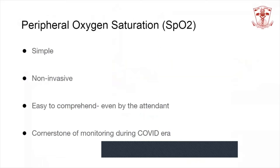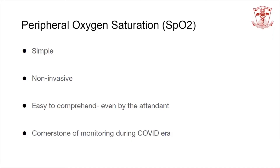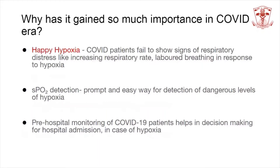Talking about peripheral oxygen saturation, it is one of the most simple, non-invasive, and easy-to-comprehend parameters that can be measured in a COVID patient. It denotes the proportion of hemoglobin molecules that are fully saturated with oxygen and has become the cornerstone of monitoring during the COVID era. COVID patients demonstrate happy hypoxia — they fail to show signs of respiratory distress by increasing respiratory rate or labored breathing even in response to severe hypoxia. Oxygen saturation helps us detect these dangerous hypoxia levels promptly.